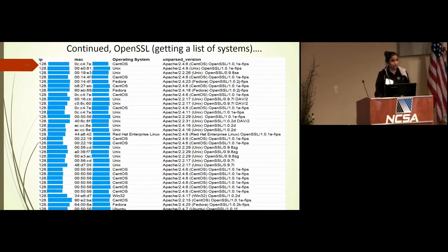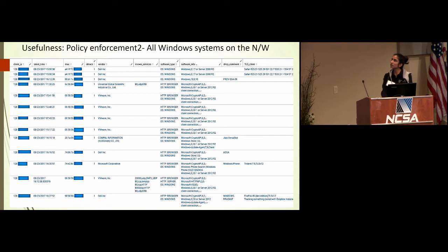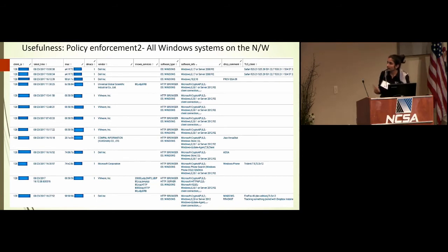Continuing policy enforcement: you can ask any question about what software or what version is running. For example, I pulled all Windows systems on the network — we had thousands of devices running Windows. The inventory shows their HTTP browser, Windows OS type, and the specific OS version they're running. This lets us easily target old Windows versions when needed.